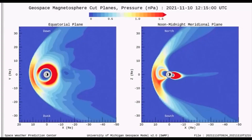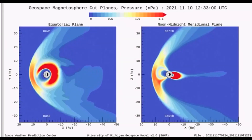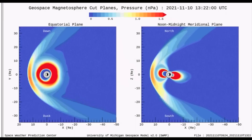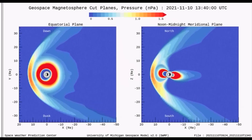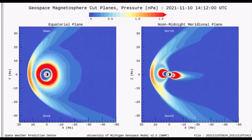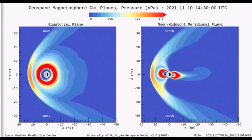On this geospace magnetosphere model, the pressure from the solar wind can be gauged as we observe the red areas around the Earth, which shows a higher intensity of pressure today.